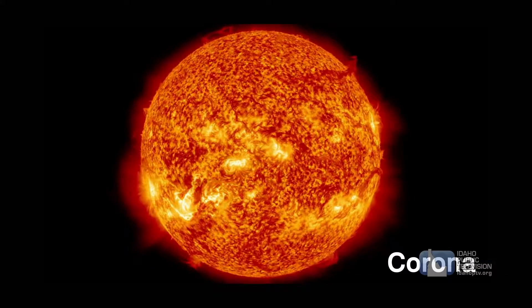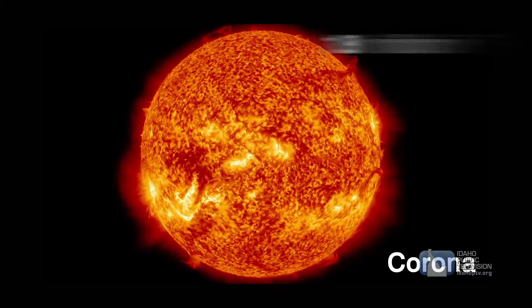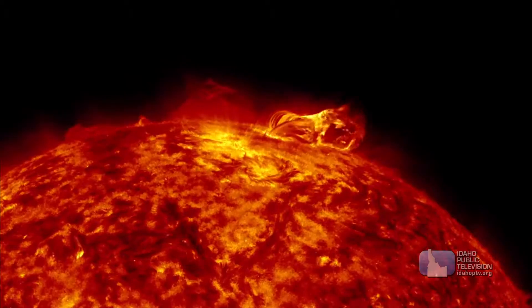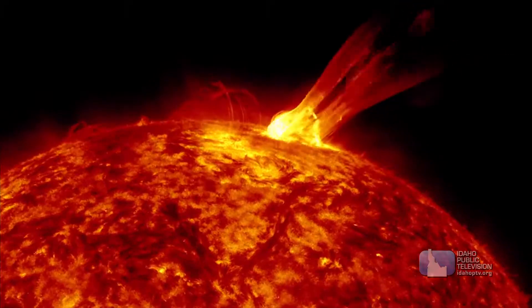The sun's outside layer is called the corona. Its temperature is over 1.8 million degrees Fahrenheit. The wispy material in the corona spreads out into space millions of miles.